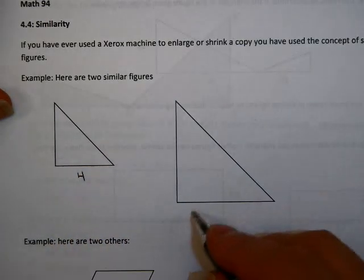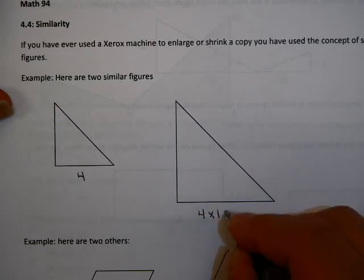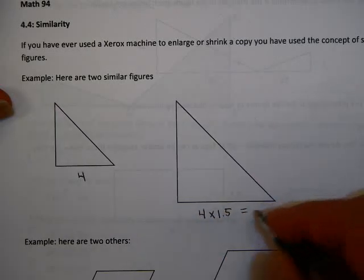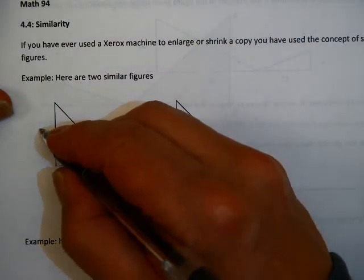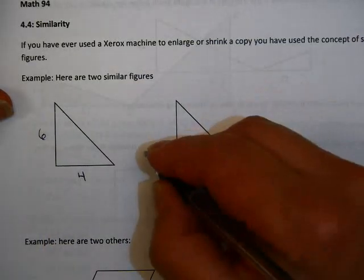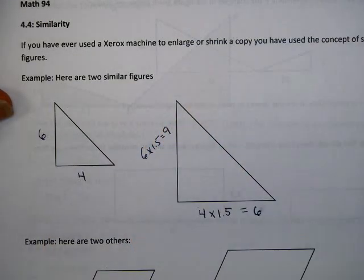Now let's think about what that means. If this were four here, since this is one and a half times larger, this would have to be four times one and a half, which gives me six. If this, for example, were six, this would have to be one and a half times larger and give me nine.